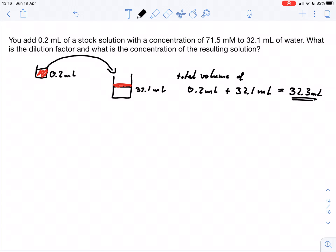And we have 0.2 milliliter put into this total volume. So the dilution factor in this case would be total volume divided by the volume of the stock solution.